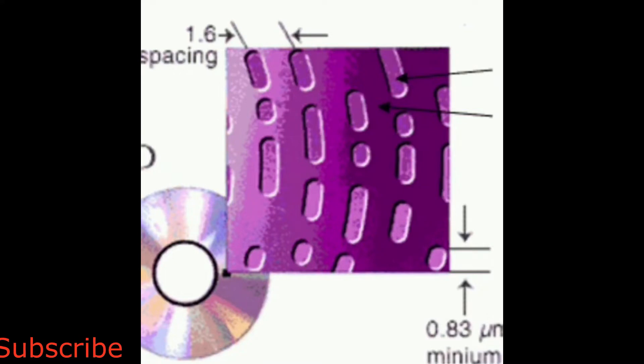It is made up of polycarbonate layer with molded spiral tracks on the top. The data are stored on CD or DVD as a series of minute grooves which are known as pits encoded on these spiral tracks.